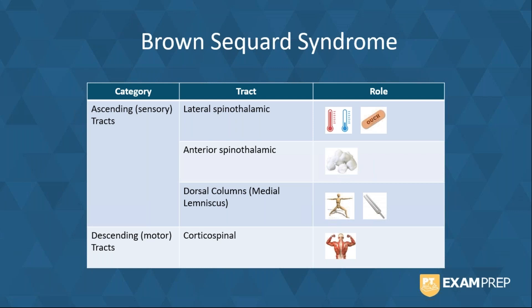And then the dorsal columns. This tract is responsible for carrying information about proprioception, vibration, stereognosis, and two-point discrimination to the brain.